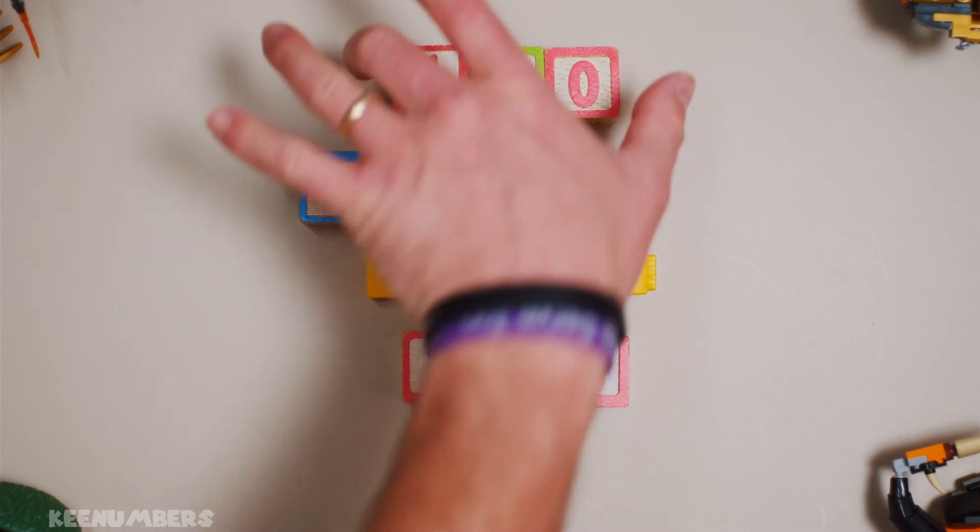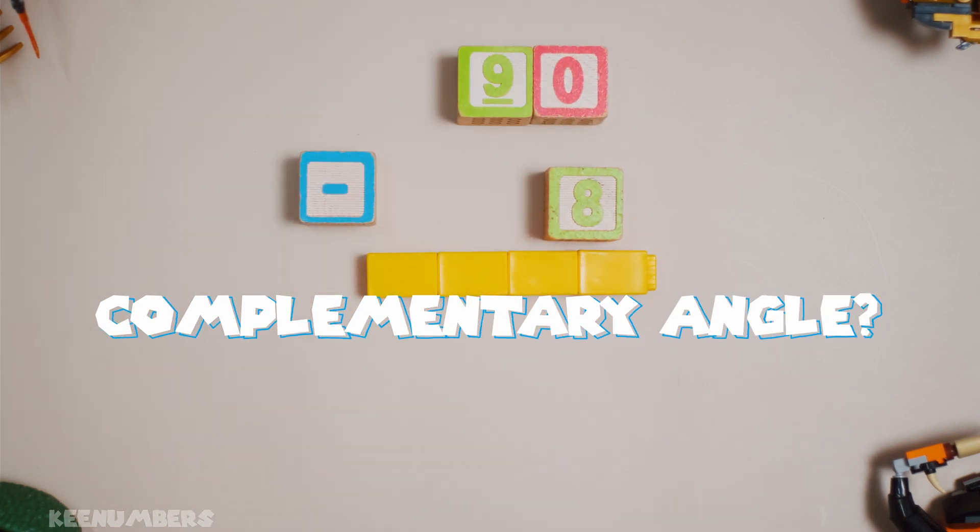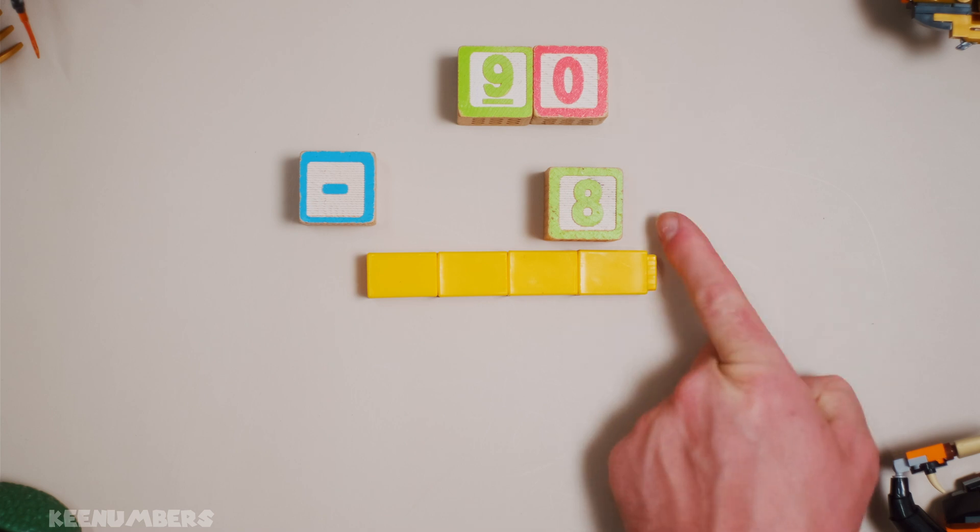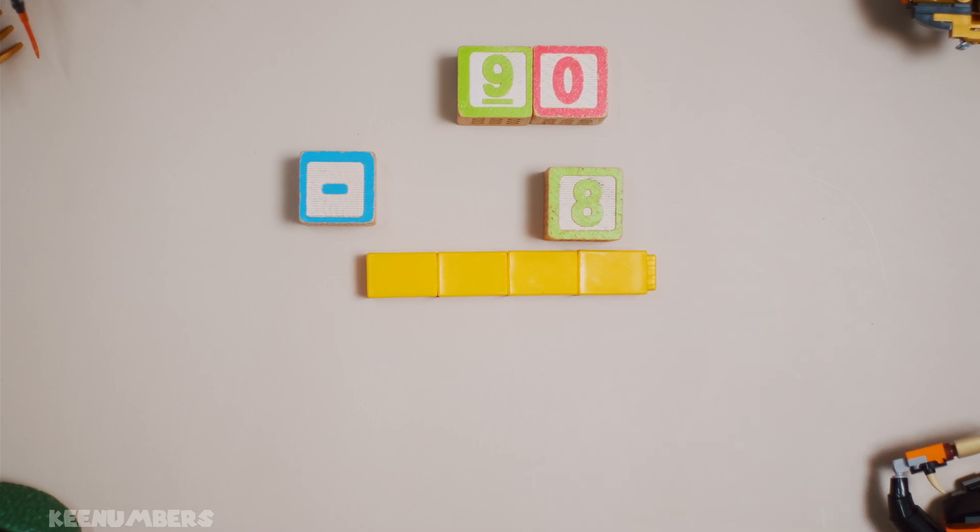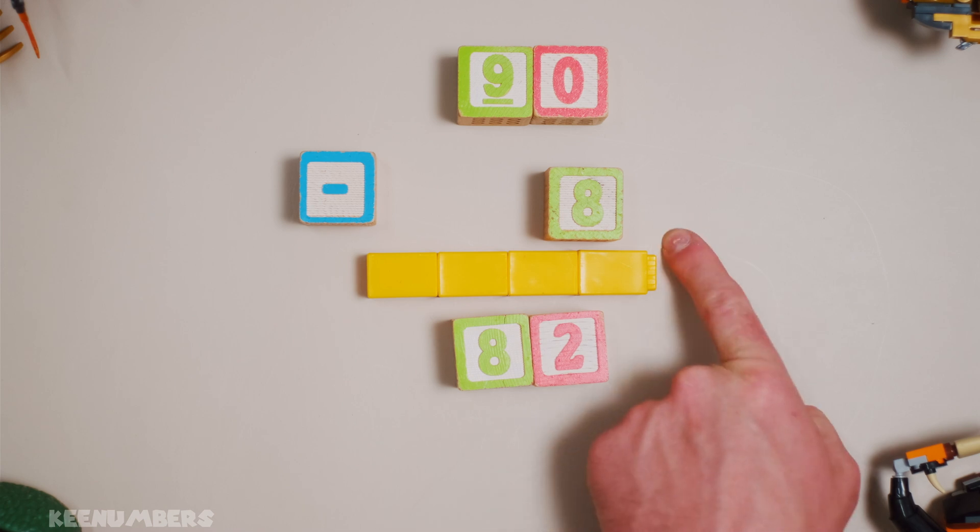Now, to find the complementary angle, if you had watched the previous video on complementary angles, you're looking for the difference of 90 and 8 to find the complementary angle. Well, this one's not too hard. You walk backwards from 90 eight steps and you'll get good old 82. 82 is the complementary angle of 8.